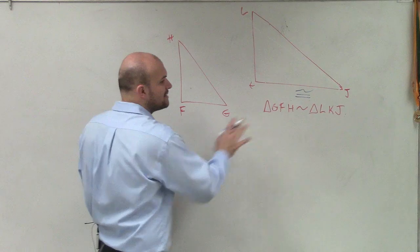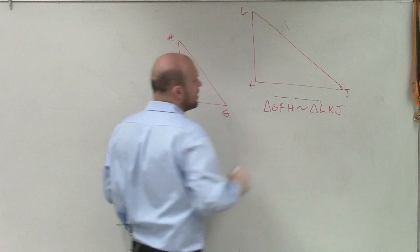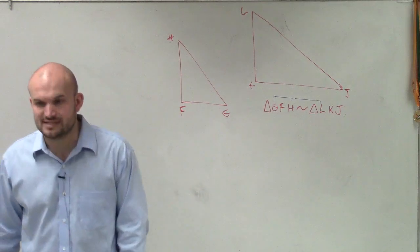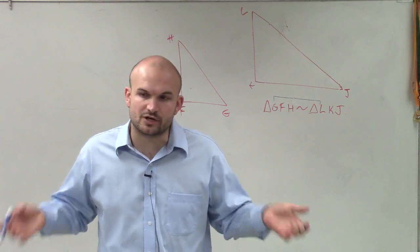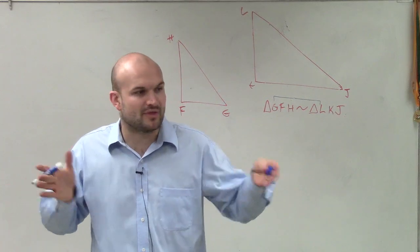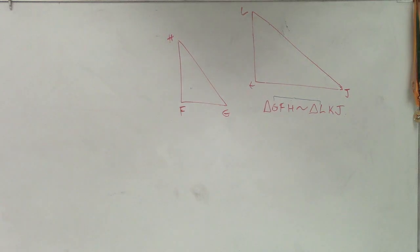So the corresponding parts in this triangle, we can do the same thing by going back to our similarity statement. Because remember, when you do a similarity statement, just like when you did a congruency statement, you have to label them in the same order. You have to label them in the same order.